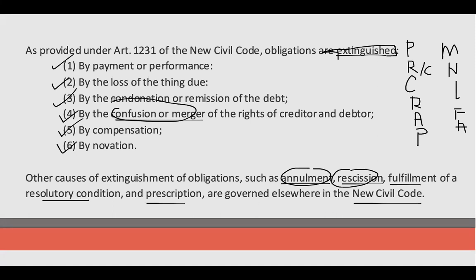Merger or Confusion — this is a scenario wherein you are the debtor and the creditor at the same time. Example: pumutang si Juan de la Cruz kay Pedro. Tapos inissuehan ni Juan de la Cruz nang promissory note si Pedro. Ngayon, itong si Pedro hindi makapaghintay doon sa due date nang promissory note. Ninegosiate niya sa ibang tao — sabi niya, 'Carlo, gusto mo bang ikaw nalang maningil ng one hundred thousand kay Juan de la Cruz?'